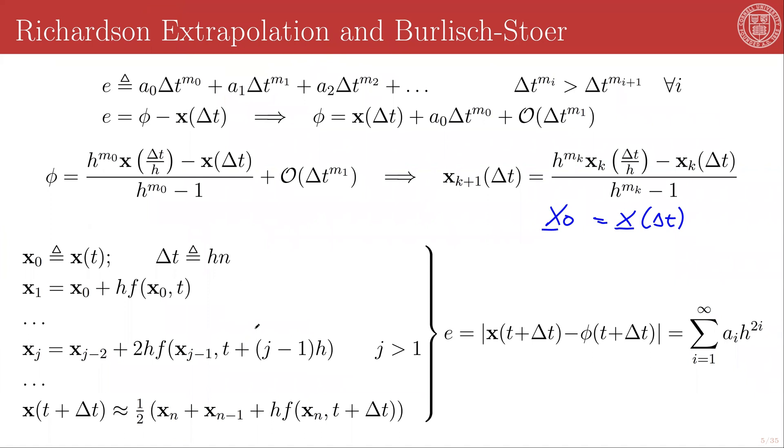The basic scheme of Bulirsch-Stoer is a modified midpoint method. You are going to advance by a time step Δt = h/n with your first iterant x_0 being set to your current condition x(t), and then x_1 being set to x_0 + h times the function evaluation of x_0, t, and on and on,